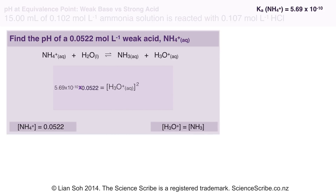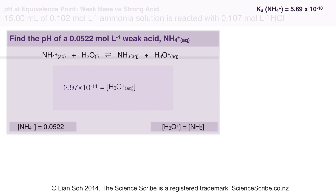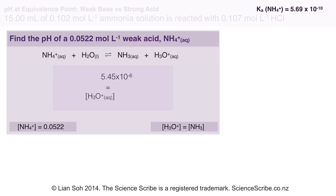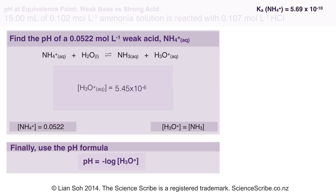We then rearrange the Ka expression to find the hydronium ion concentration. Once I know [H₃O⁺] I can use the pH formula directly — no conversion needed since the pH formula takes [H₃O⁺] straight in. This tells me that at equivalence point the pH is 5.26.